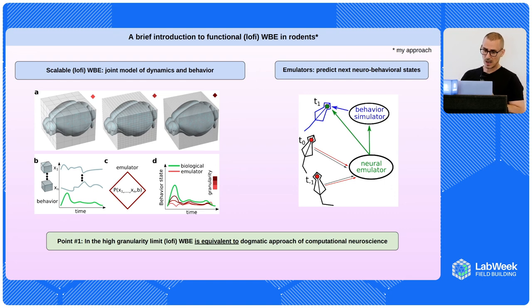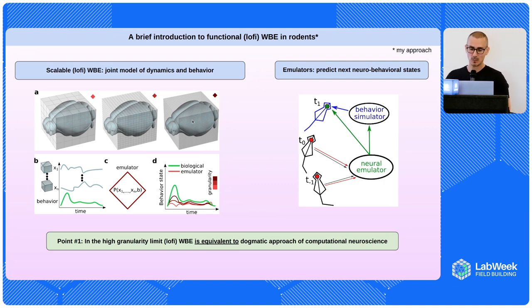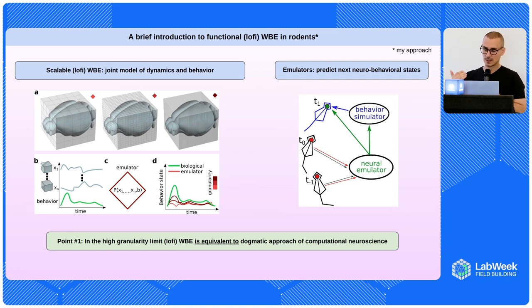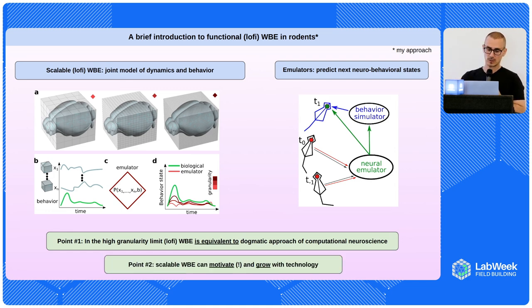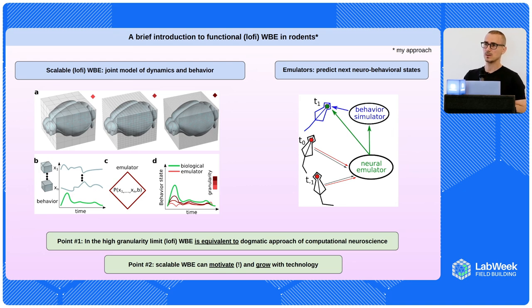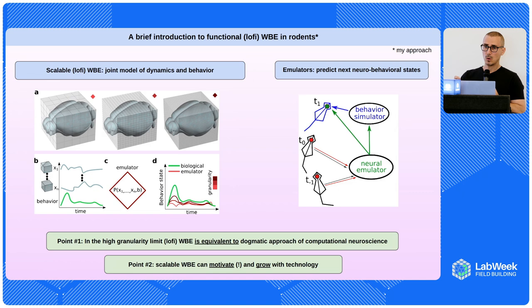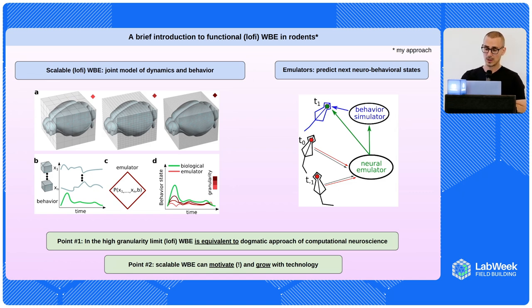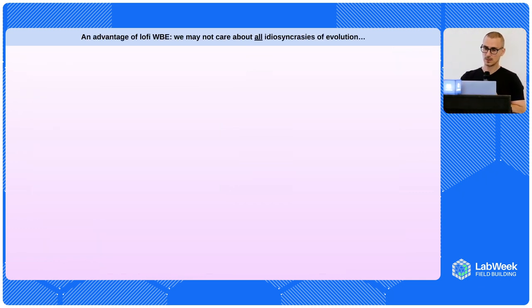In the high-granularity limit — if we keep going to the point where we record atoms and proteins — we're just doing what computational neuroscience is doing, except we're coming from the functional perspective. Point number two: I'm trying to build this field, and I would like to motivate others to make technology for this to work so we can actually grow this field.